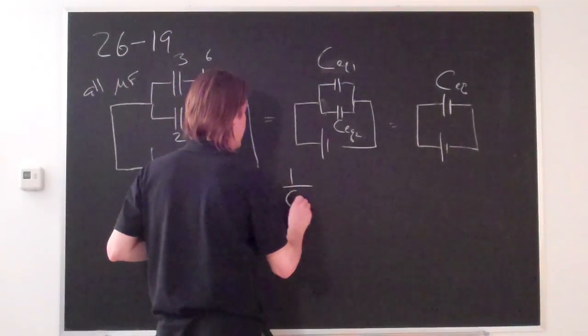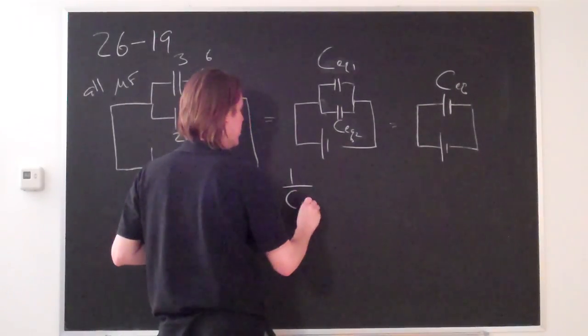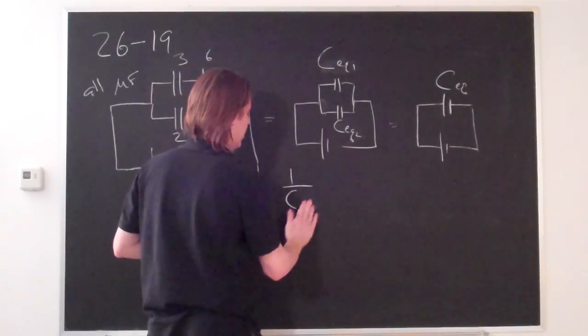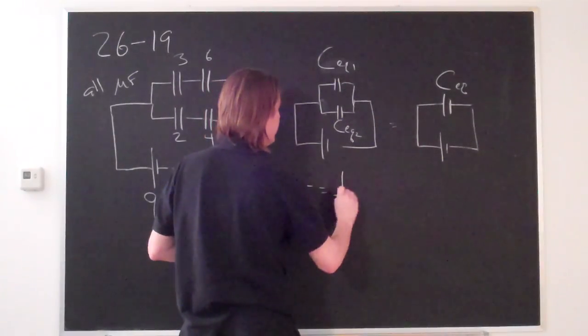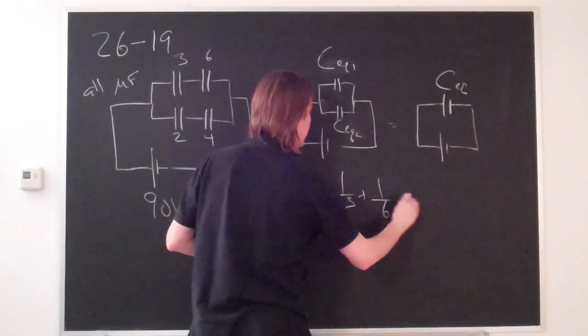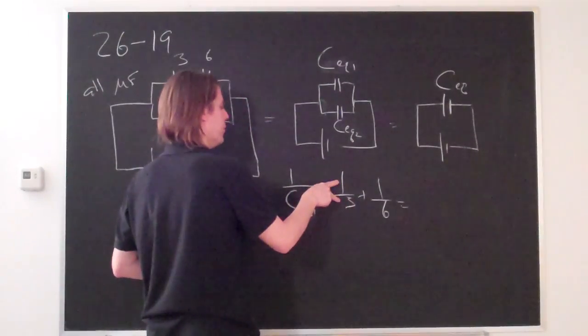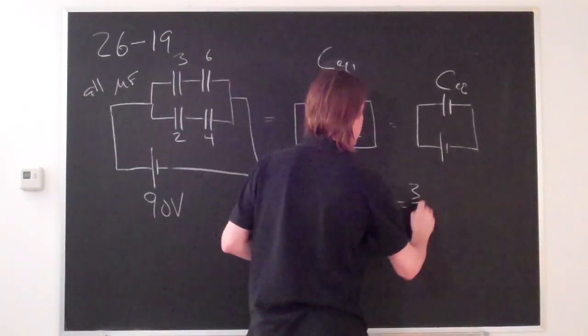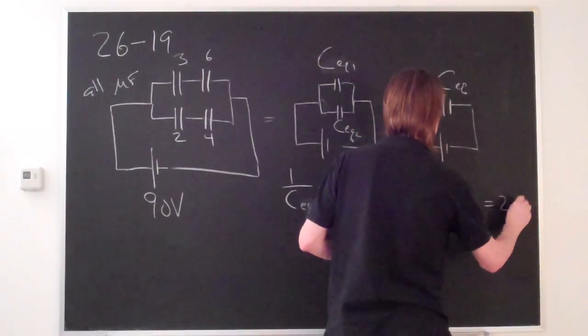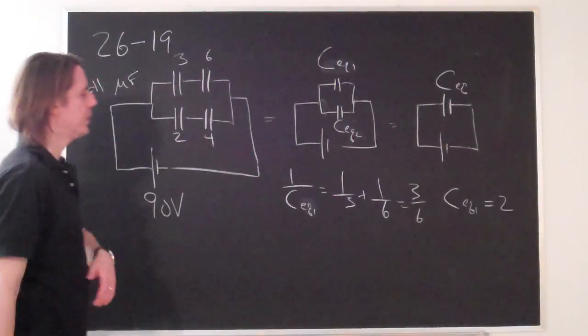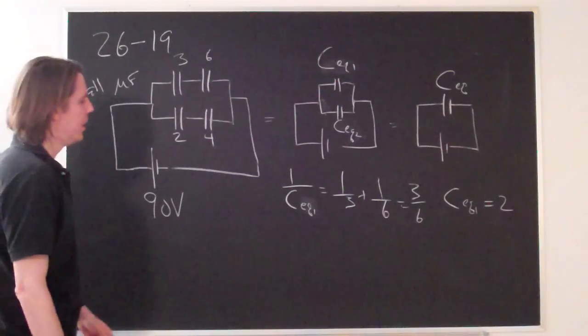We're adding 3 and 6 in series, so what does that mean? That means 1 over C_eq1 equals 1 over 3 plus 1 over 6, which equals 3 over 6. So C_eq1 equals 2 microfarads.